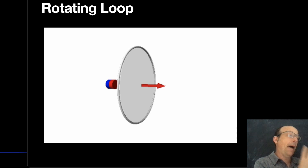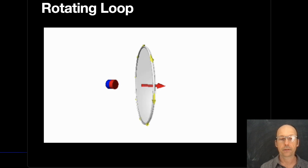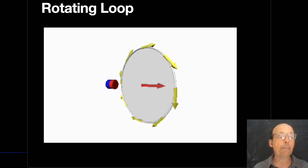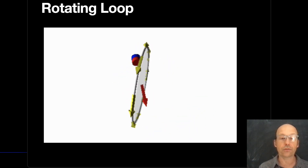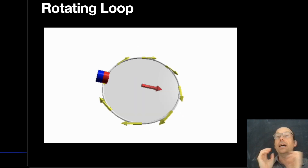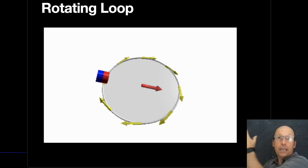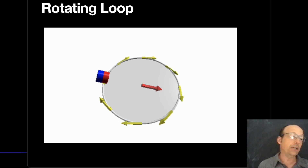Another example: now we let the plate rotate with a fixed magnet. The magnetic field doesn't change, but the flux does change because the loop is rotating. As it rotates, less magnetic field passes through the loop, so the flux decreases. That means the induced current wants to make a magnetic field in the same direction as the original field, to keep the flux from decreasing.